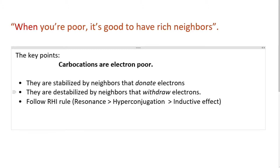To check the stability of carbocations, we always follow the RHI rule: check Resonance first, then Hyperconjugation, then Inductive effect. Resonance always has higher priority than hyperconjugation, and hyperconjugation has higher priority than inductive effect. The one with the higher number of resonating structures will be more stable.